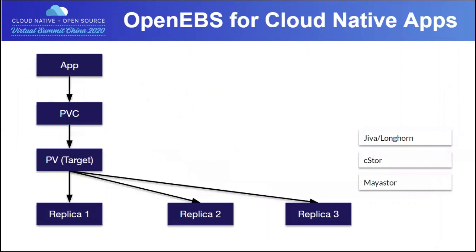For applications that are not themselves distributed — for example, running GitLab where your Vitess server is not distributed — these can use the replicated functionality available with storage engines like C-store, Mayastor, or Jiva. Each of these applications can get its own storage controller. Instead of using a shared storage controller, you use a dedicated micro storage controller that takes IOs, performs data services, and also takes care of replicating the data to different nodes. If the node on which the target is running is lost or rebooted, these Kubernetes pods get rescheduled to a different node and the target connects to the remaining available replicas.